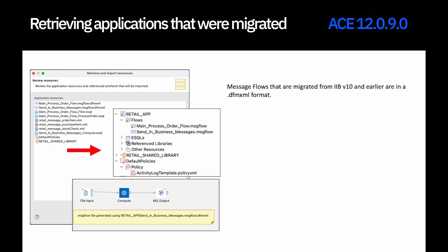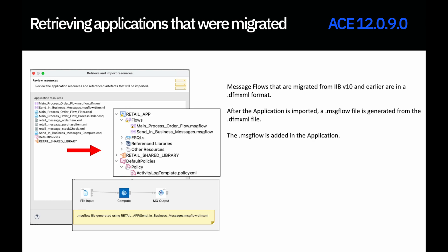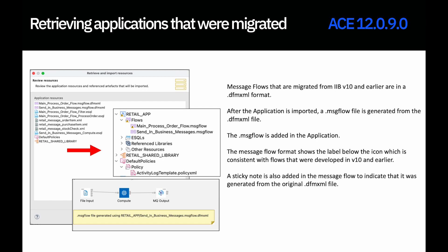You're now able to retrieve applications which were migrated from version 10 and earlier. If a flow was migrated from version 10 to version 11 or version 12, the message flow would have been deployed as .dfmxml. These applications could not be retrieved fully in 12.0.8, but in 12.0.9 you can now retrieve those applications and the dfmxml files are converted to message flows. A sticky note is shown in the flow to indicate that the message flow was generated from the dfmxml file.